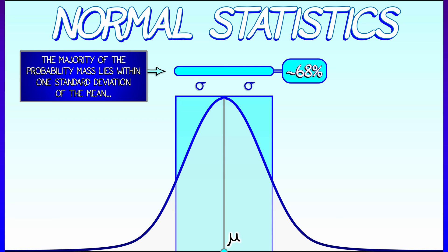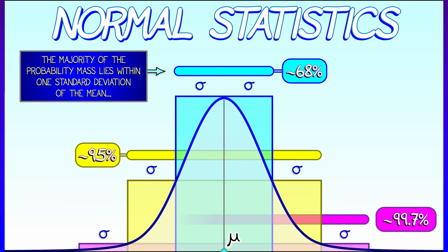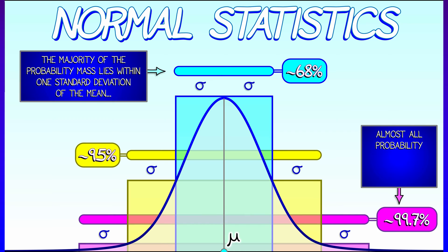It's like about 68%. And if you go out to two standard deviations, it's a lot more. It's like 95%. And at three standard deviations, you're getting 99.7% of the probability mass there. Okay, that's the story.